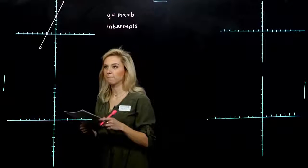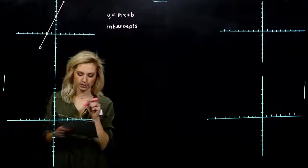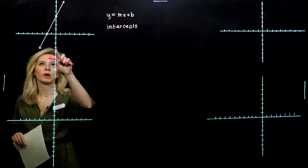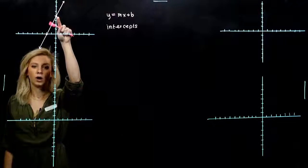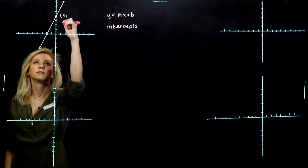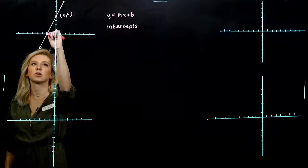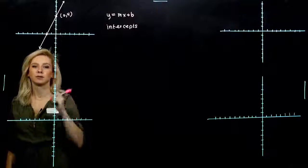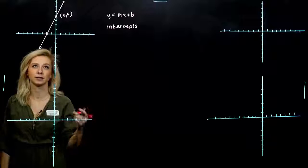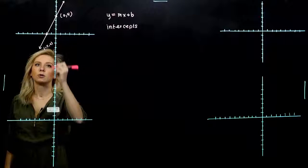Looking at that first graph, note where the x and y-intercepts occur. The y-intercept, where it crosses the y-axis, is at the point (0, 4). And where does it cross the x-axis? The x-intercept is happening at (-2, 0).